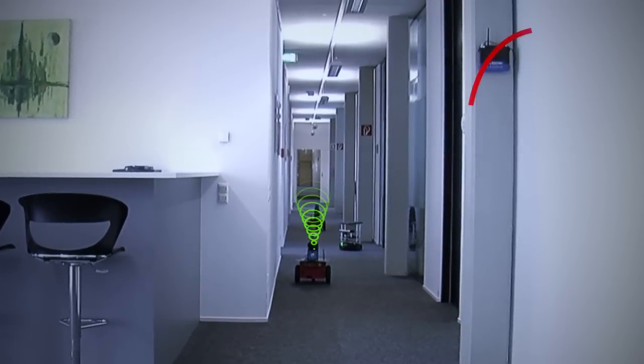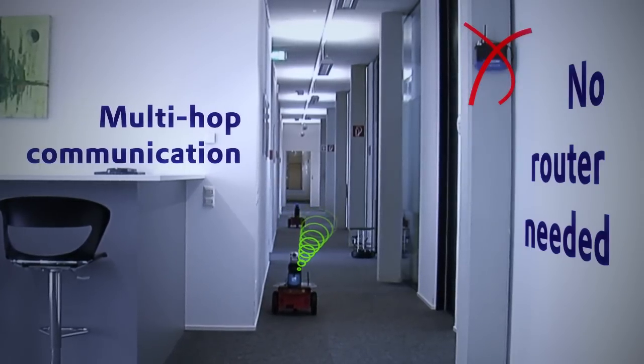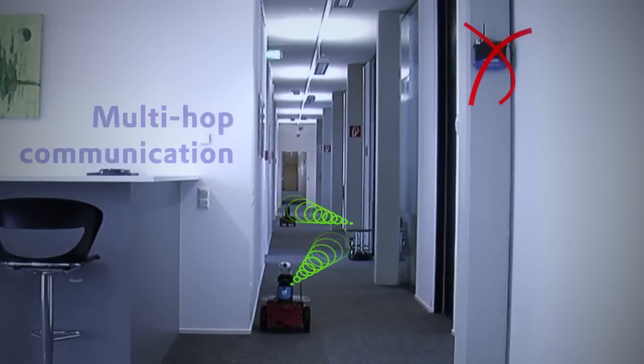If communication links between robots fail, they will automatically search for new routes. Bob and Molly switch to multi-hop communication using Kim.